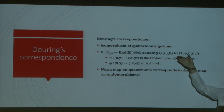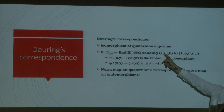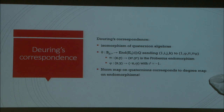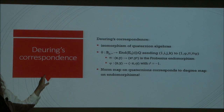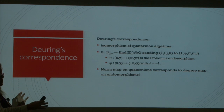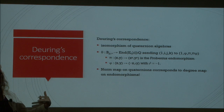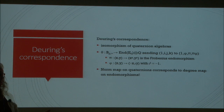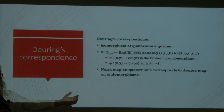In our example, we had endomorphisms pi (the Frobenius) and phi (the special map). The isomorphism associates phi with i, pi with j, and pi·phi with ij. The other correspondence: on the quaternion side there's the norm map, and on the isogeny side there's the degree map — the degree being the size of the kernel. These match up under the Deuring correspondence.